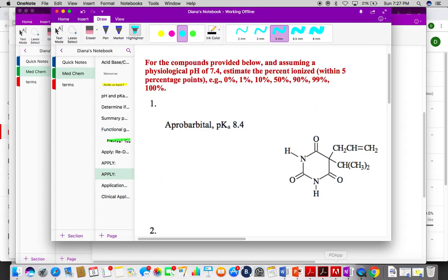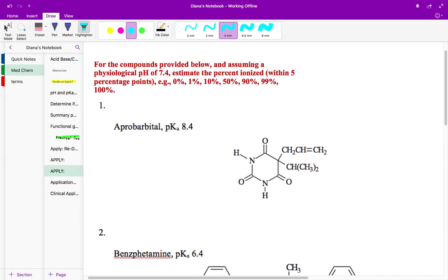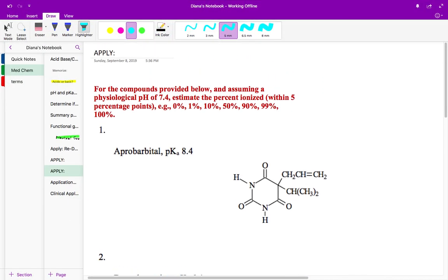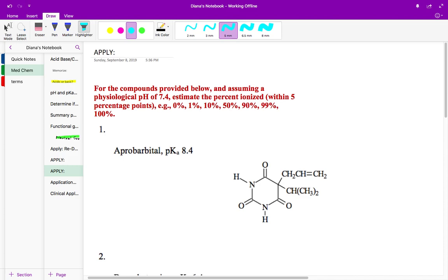All right, so in this video we're going to continue with applying acid-base chemistry to different practice problems. For this question we're asking, for the compounds provided below and assuming a physiological pH of 7.4, estimate the percent ionized within five percentage points.